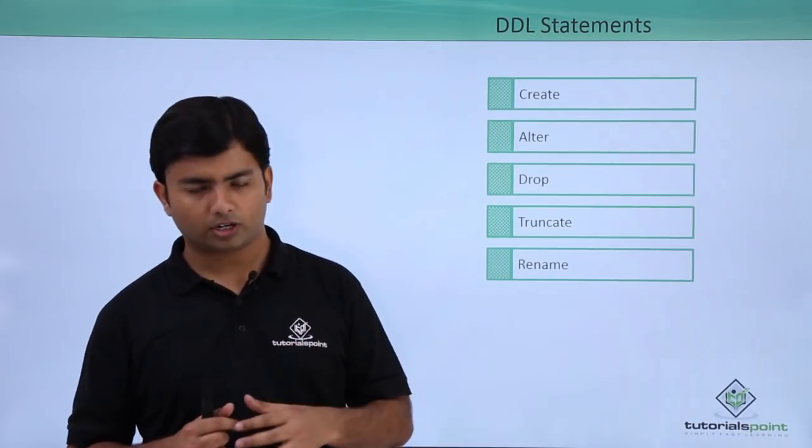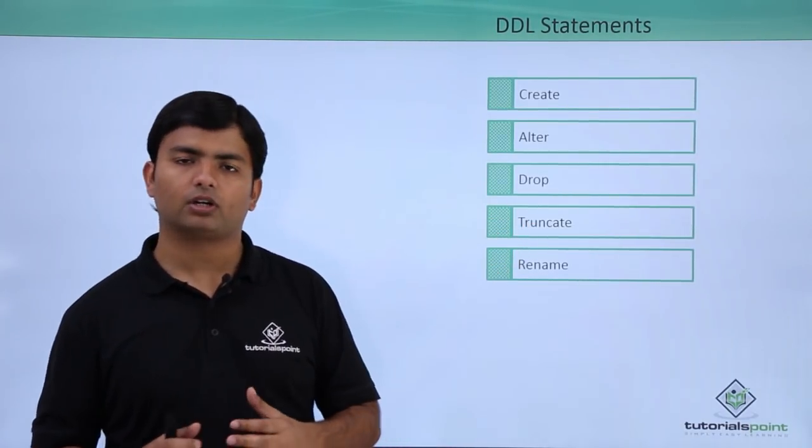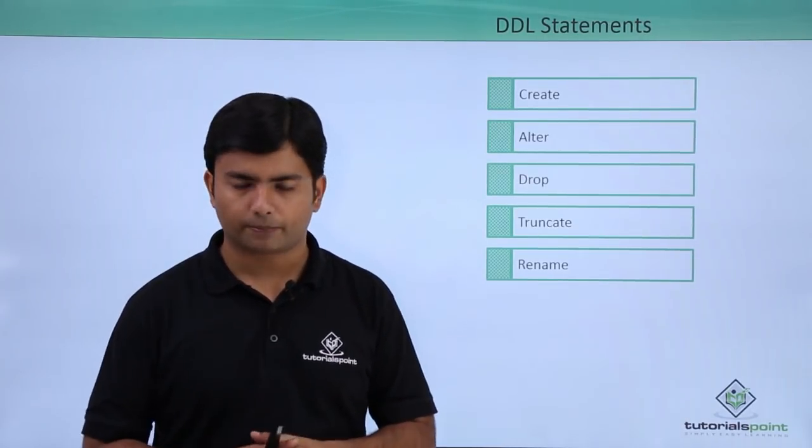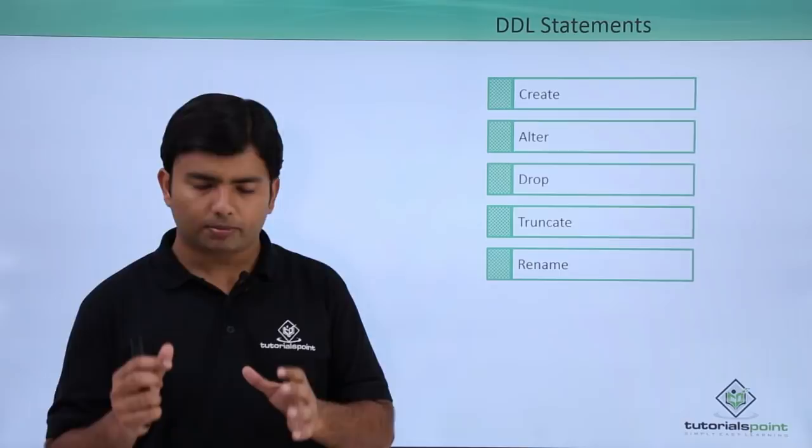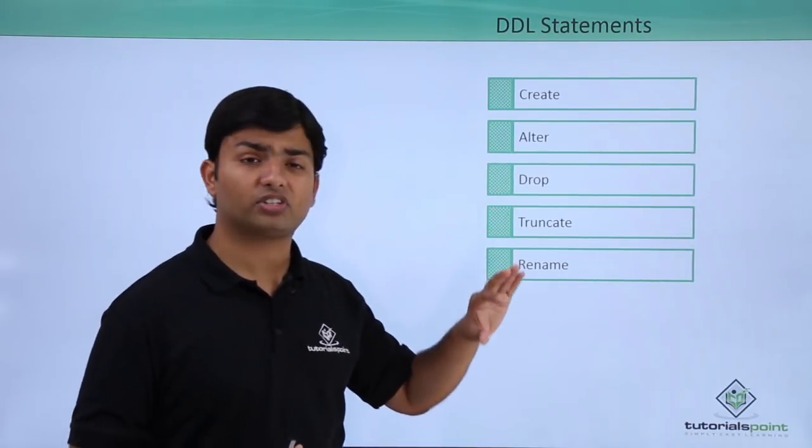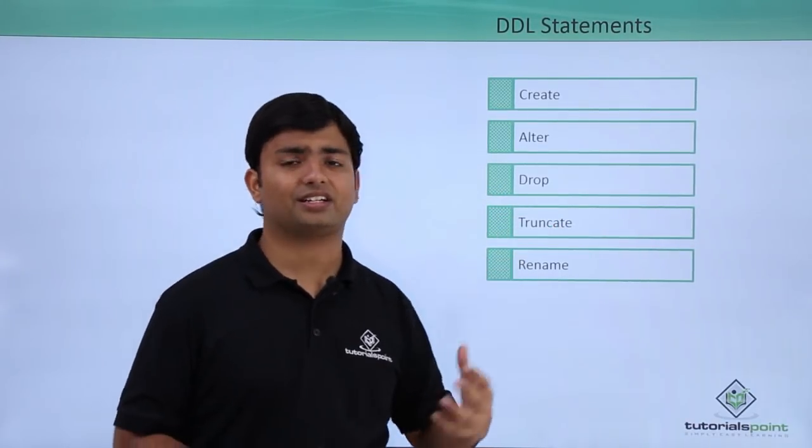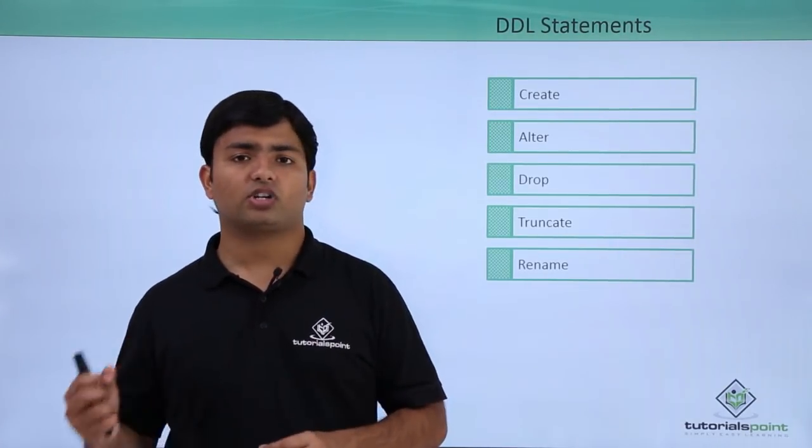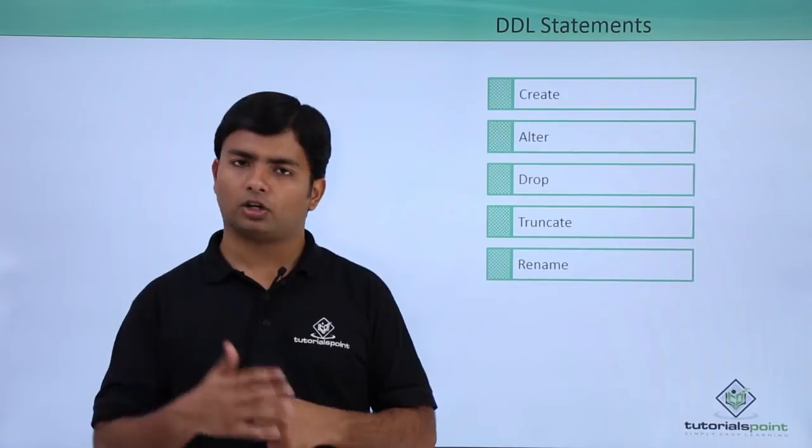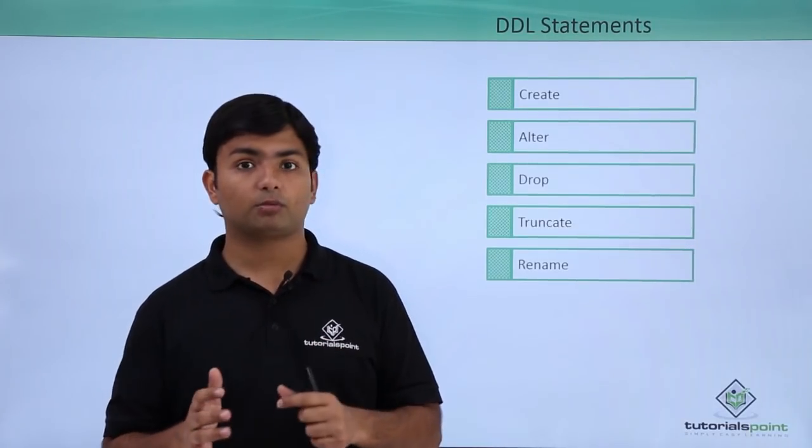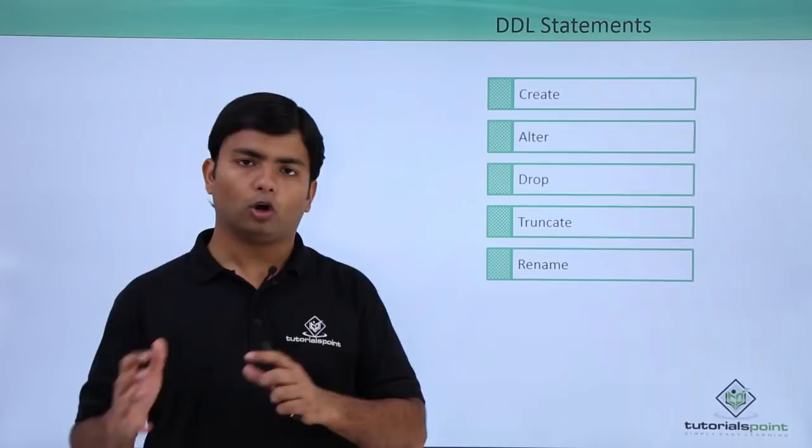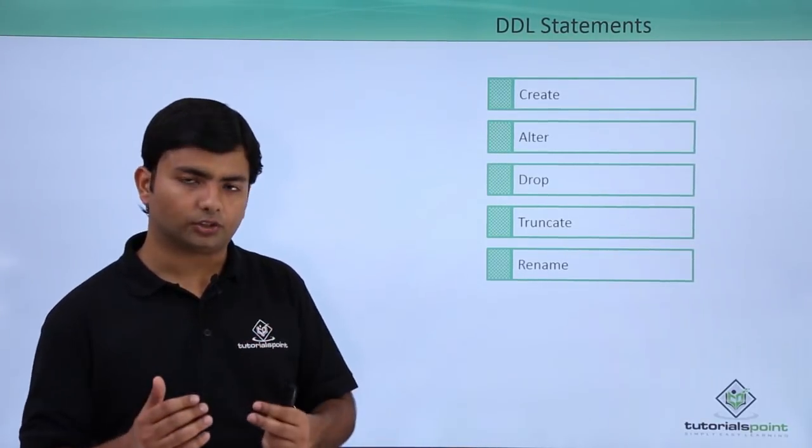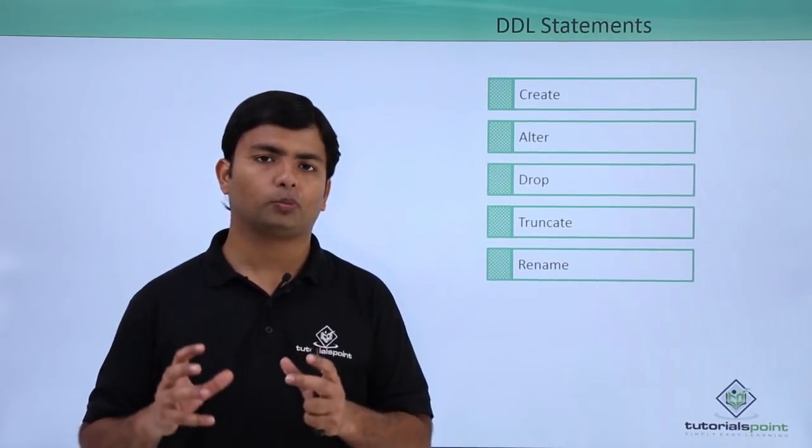Whenever you execute this TRUNCATE statement, all the data of the table will be gone. You might think it's just removing the data, so how come it is categorized in the data definition language? When you execute TRUNCATE statement, it removes all the data from the table but it will not remove the structure. Along with the removal of data, it will also release and free all the spaces occupied by that particular amount of data.